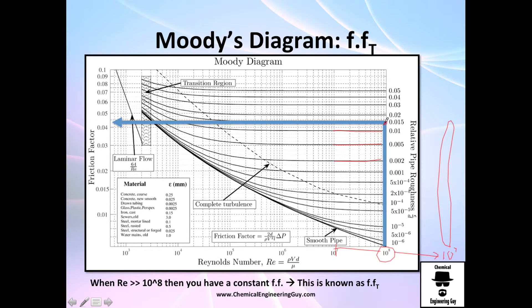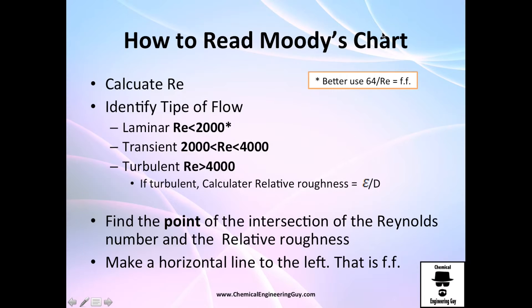So what's the value? Just go to the left and you got your... This will be about 0.044. That will be your FFT, which is your friction factor at complete turbulence.